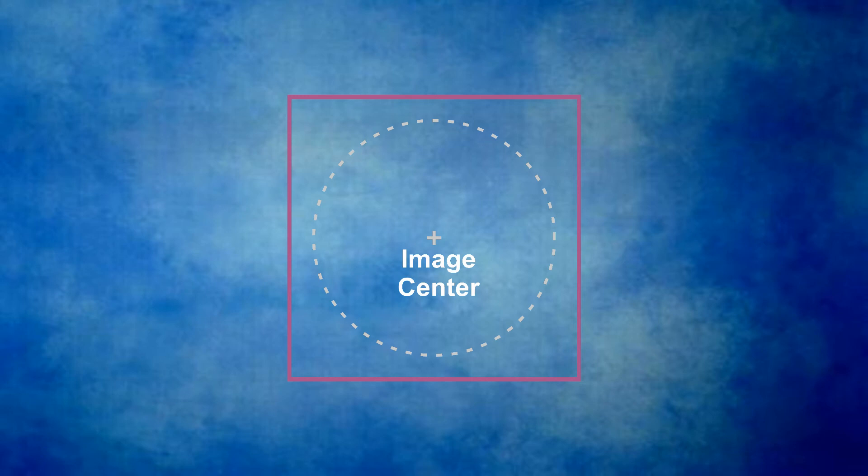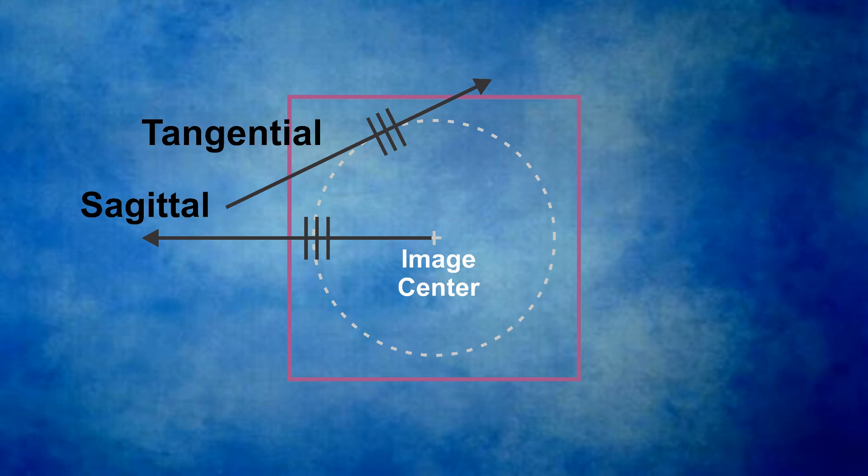This rectangle represents an image. We draw a circle centered on the image and add an arrow that is tangential to the circle. This is the tangential direction. Bars represent a target that might be used to measure tangential resolution. We add another arrow in the sagittal or radial direction, with bars that might be used to measure the sagittal resolution.